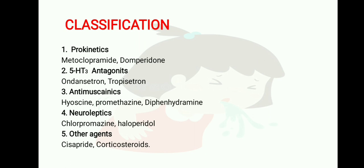Classification of anti-emetics. First are prokinetics — drugs include metoclopramide and domperidone. Second are 5-HT3 antagonists — drugs include ondansetron and tropisetron. Third are anti-muscarinics, including hyoscine. Fourth are neuroleptics — chlorpromazine and haloperidol. Other agents include cisapride.